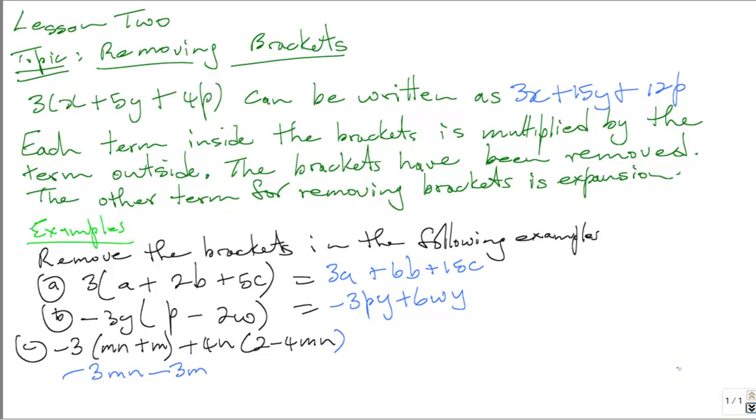And then positive 4n by 2. You multiply 4 by 2, that's 8. And the n, that's 8n. So positive 4n times 2 is positive 8n. Positive 4n times negative 4mn. That will give us negative 16mn square.